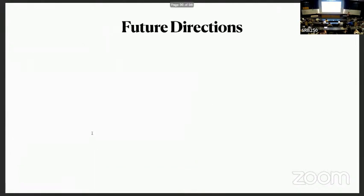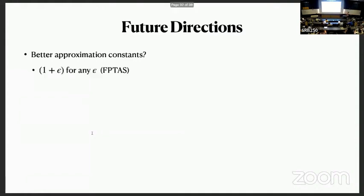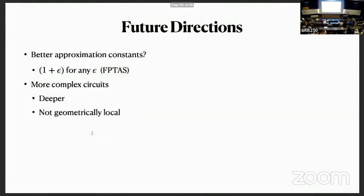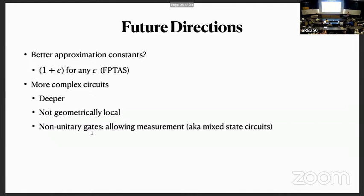That's it — now I just have future directions. The first is better approximation constants. We showed an approximation ratio of D plus 1, but maybe you could hope to get a ratio of 1 plus epsilon for any constant epsilon. You might also want results for more complex circuits: deeper circuits, circuits that aren't geometrically local, all-to-all connectivity, or where you allow non-unitary gates like measurement and tracing stuff out. Thank you.